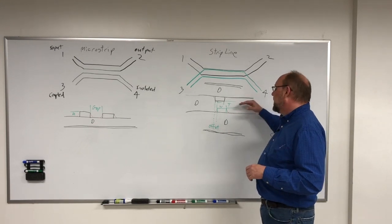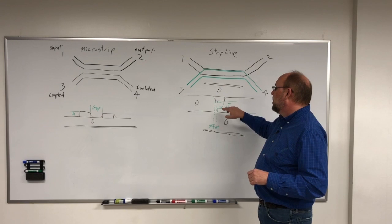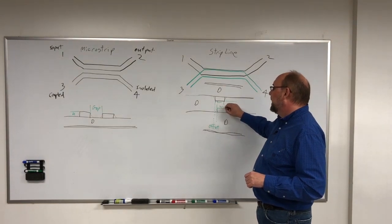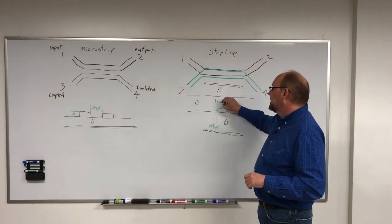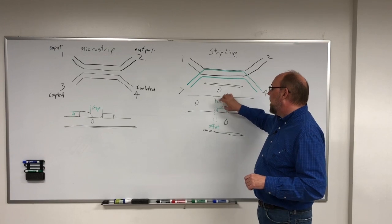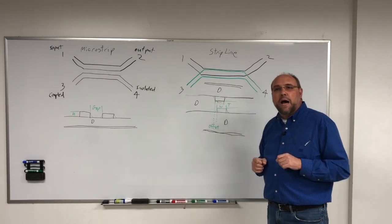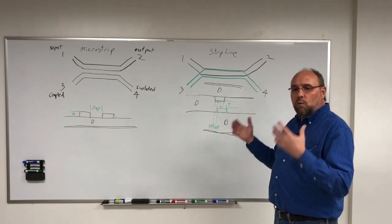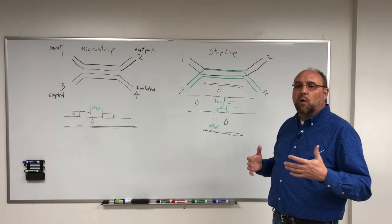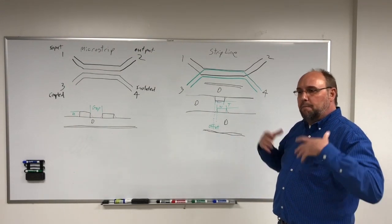So controlling the dielectric constant in these features, as well as controlling the width, the height, and the distance and the position of offset relative to each other. All those things have an impact on how they couple, what frequency they couple at, how much power they can actually passively couple.